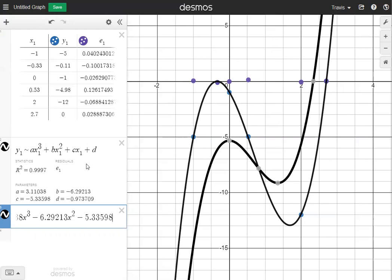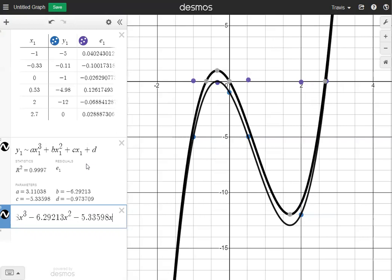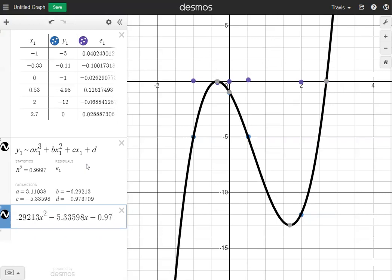Put an x beside that. And then I'm going to add d at the end, which is negative 0.9737. So now I have my black regression function right there.